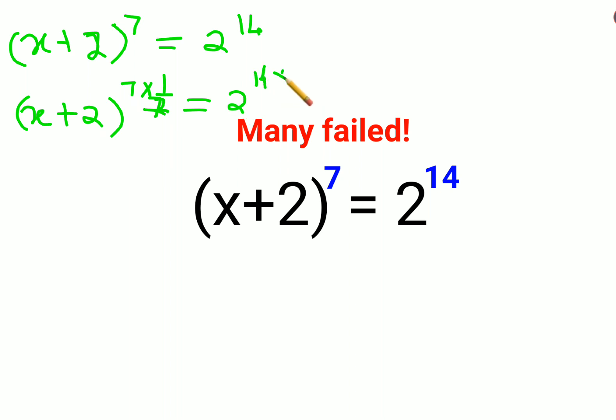So 2 raised to 14 times 1/7. What happens is the 7s cancel. I am left with x+2 on the LHS, and on the RHS, 14 times 1/7 gives us 2. So 2 raised to 2.